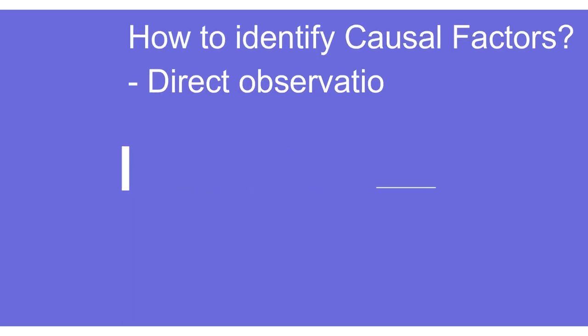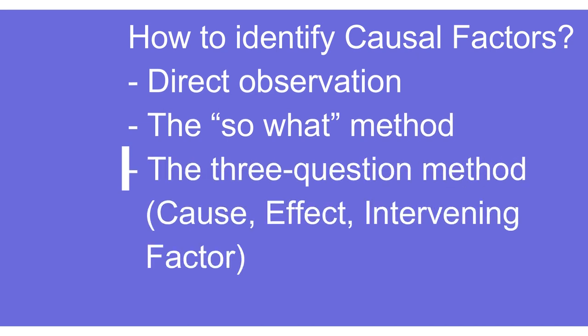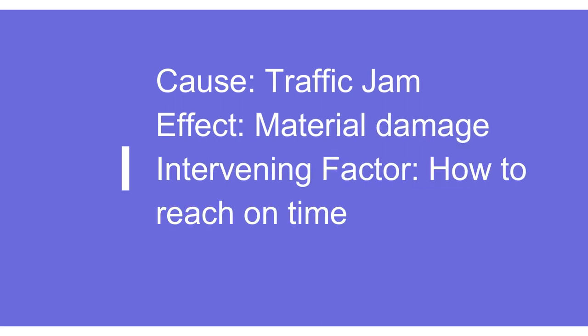That brings up the necessary conditions by which we can identify whether there is a causal factor. First is direct observation. Second is using the 'so what?' technique by asking that question repeatedly. Third is a three-question method: what is the cause, what is its effect, and what are the intervening factors? Using the traffic jam example: the cause is the traffic jam, the effect is material damage due to bad road conditions, and the intervening factor was the need to reach the customer on time.